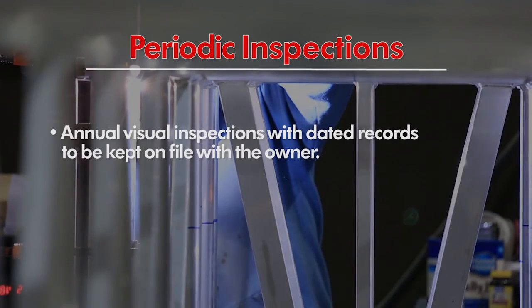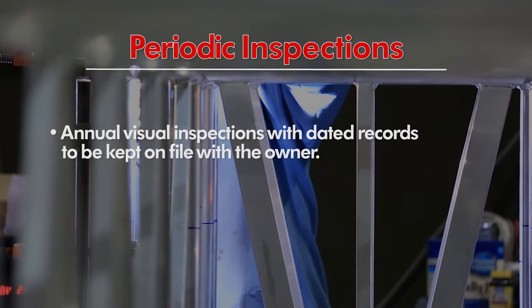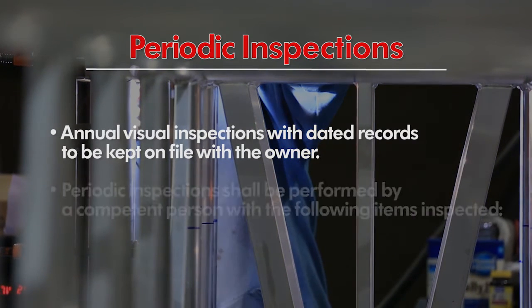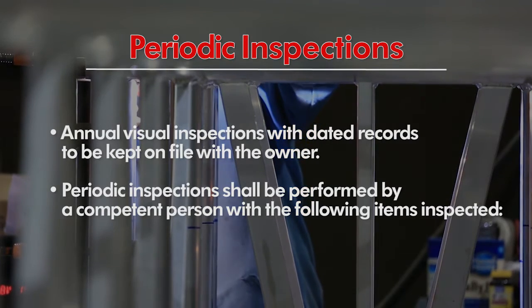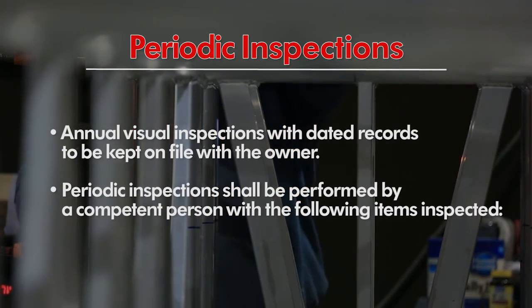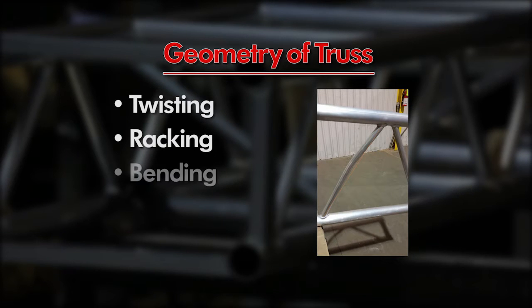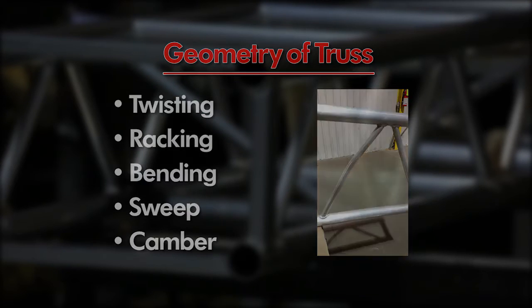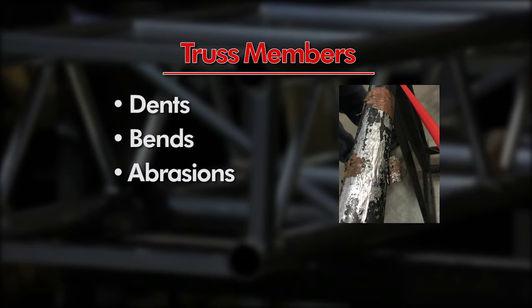Periodic inspections are defined as annual visual inspections with dated records to be kept on file with the owner. Periodic inspections shall be performed by a competent person with the following items inspected: geometry of truss for twisting, racking, bending, sweep, or camber; truss members for dents, bends, abrasions, or missing members.